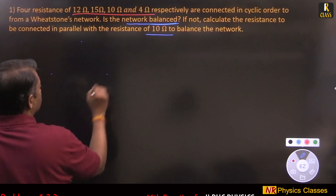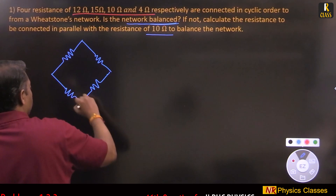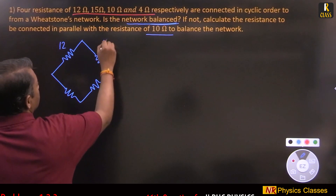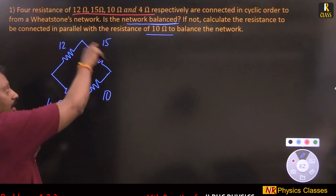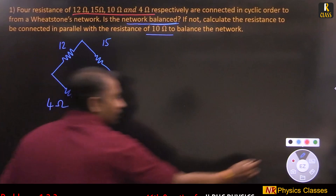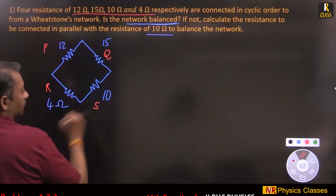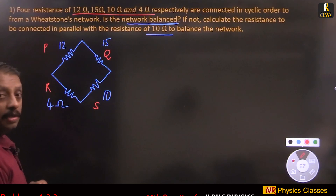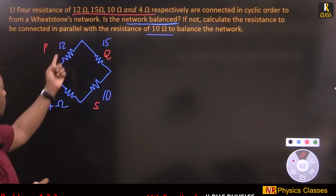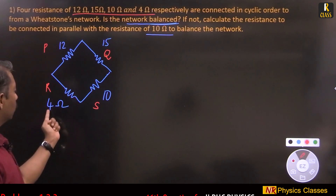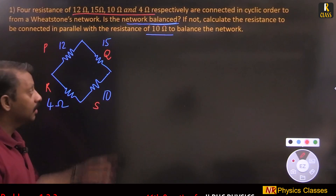It's a Wheatstone bridge network. The four resistors are 12, 15, 10, and 4 ohm in cyclic order. Label them p, q, r, s. First we have to prove p/q = r/s. Check: 12/15 = 4/5, and 4/10 = 2/5. Since 4/5 ≠ 2/5, the bridge is not balanced.